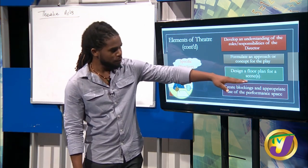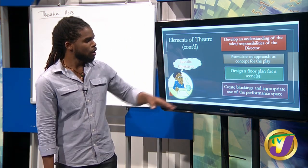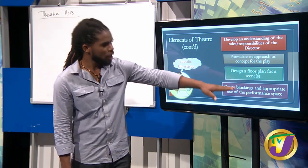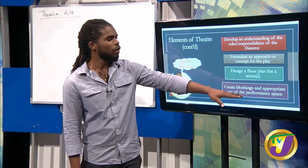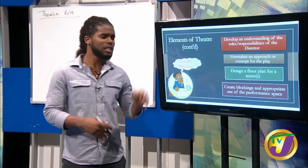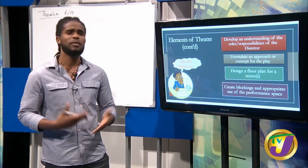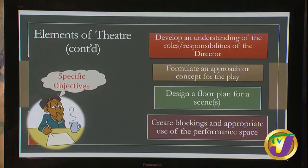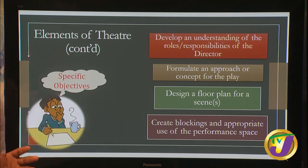The objectives also include: design a floor plan for a scene or number of scenes, and create blockings with appropriate use of the performance space. I know this is one of the things students often have a challenge with — turning their back to the audience — but we're going to briefly touch on all of that, because by now all of you would have gone through it already.